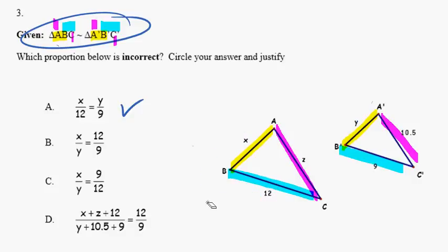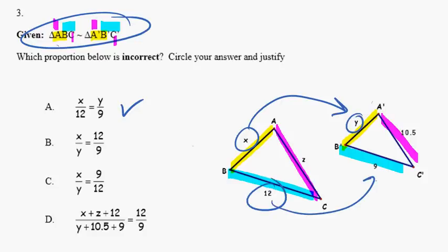The second one is comparing the yellow on the big triangle to the yellow on the small triangle, and asking: is that the same as the turquoise of the big triangle to the turquoise of the small triangle? Because the triangles are similar, corresponding sides have the same ratio. So the yellow of the big to the yellow of the small should equal the turquoise of the big to the turquoise of the small. Sure enough, that's correct as well.